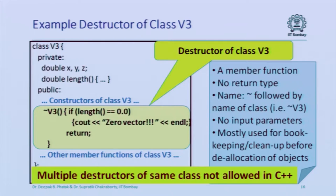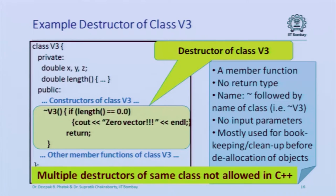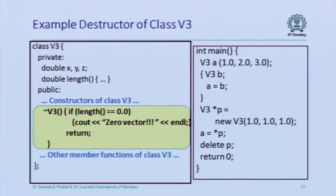Because you cannot put different kinds of parameters on a destructor, you cannot have multiple destructor functions — there would be confusion about which one to invoke. They do not accept parameters and they all have the same name.